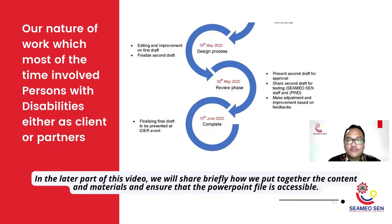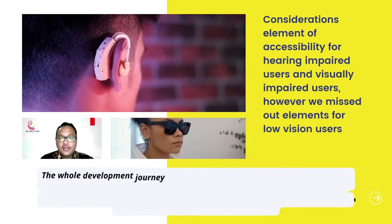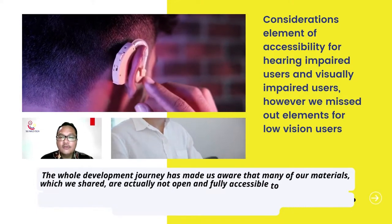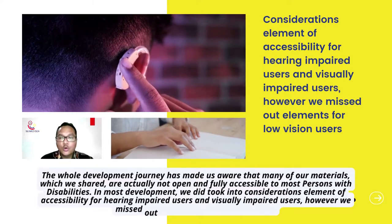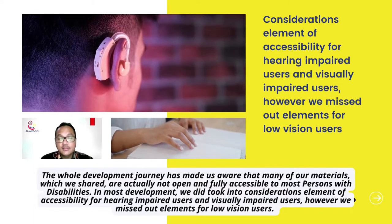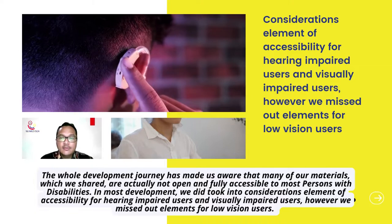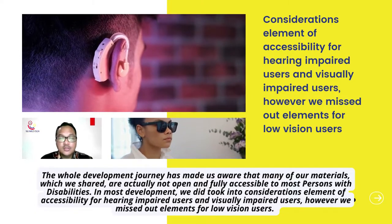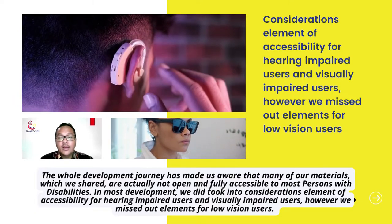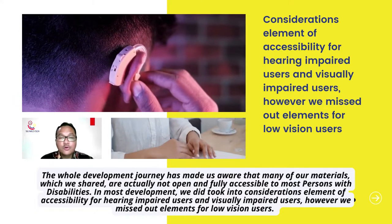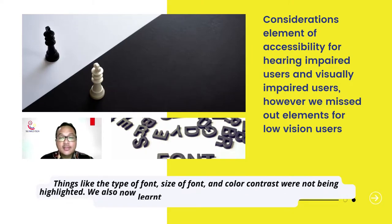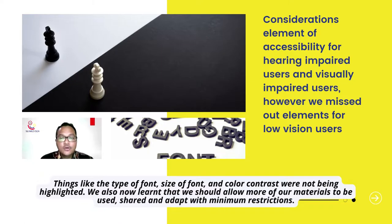The whole development journey made us aware that many of our shared materials are actually not fully accessible to most persons with disabilities. In most of our development, we did take into consideration elements of accessibility for hearing-impaired users and visually-impaired users. However, we missed elements for low-vision users — things like the type of font, size of font, and color contrast were not being highlighted. We also learned that we should allow more of our materials to be used, shared, and adapted with minimum restriction.